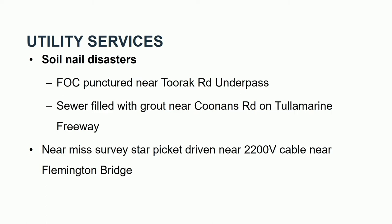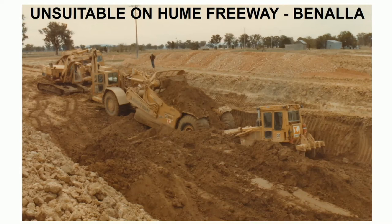For utility services — going through these DRUPTO events — I'll talk about soil nail disasters. A fibre optic cable was punctured at Turok Road underpass while drilling for batter support. Down on Coonins Road on the Tulla, we were drilling for shotcrete supporting the batters and punctured the sewer — the workers filled it with cement grout and kept pumping. There was also a near-miss where a steel survey picket was put in the ground near Flemington Bridge right next to a 2,200-volt cable.